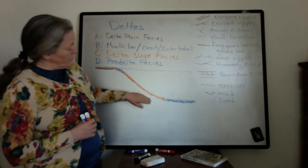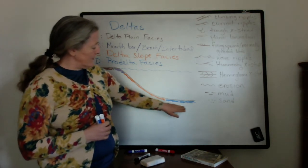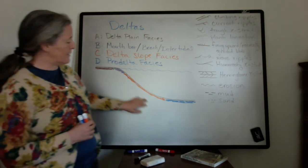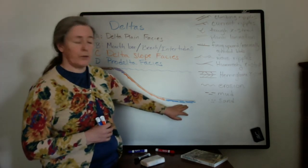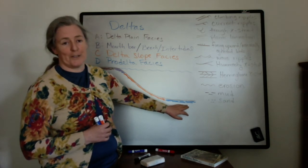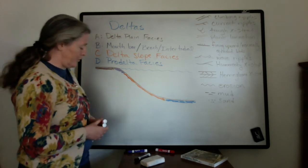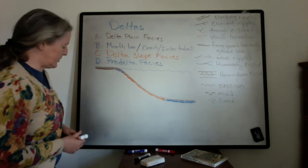As you go further into the basin, there's less and less influence from the river and that sediment. And you go into the pro-delta facies, which are mostly mudstones with a little bit of sediment from the river coming in at certain times.